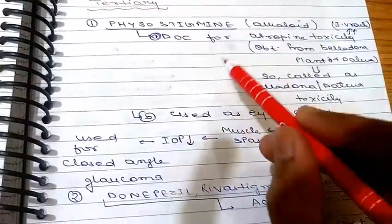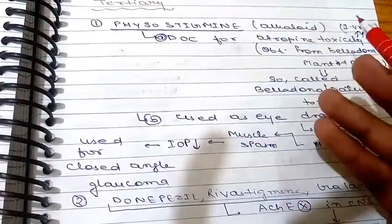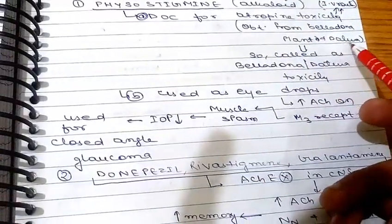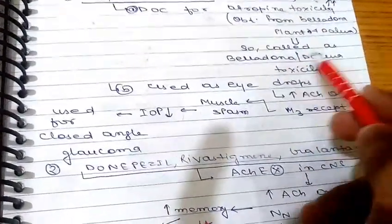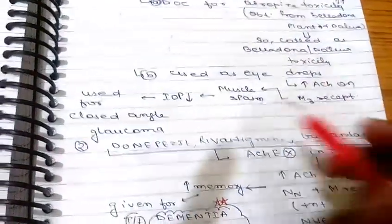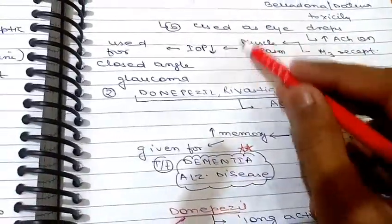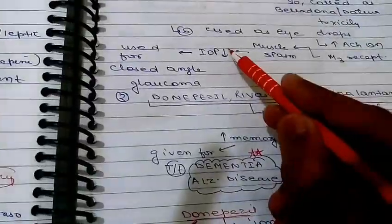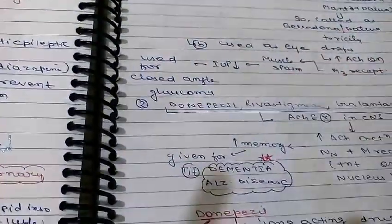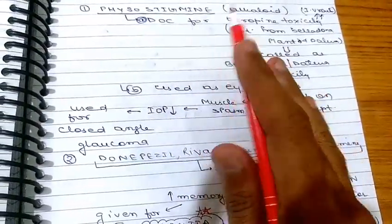Coming to the first tertiary drug — physostigmine, an alkaloid. It is the drug of choice for atropine toxicity. Atropine is obtained from the belladonna plant and datura, so this is also called belladonna or datura toxicity — physostigmine is used for belladonna and datura toxicity. It is also used as eye drops because it increases acetylcholine action on M3 receptors causing muscle contraction, which leads to decreased intraocular pressure and is also used for closed-angle glaucoma. However, pilocarpine is the drug of choice for glaucoma and physostigmine is generally not preferred because it has CNS action.